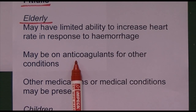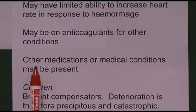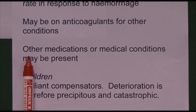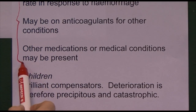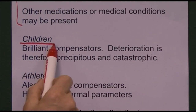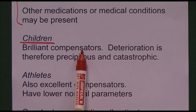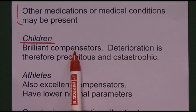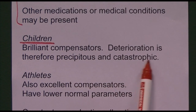Elderly patients may be on anticoagulants — even aspirin can prolong bleeding time, making haemorrhage more significant. They may also be on medications like beta-blockers that cause low heart rates. For all these reasons, severely traumatised elderly patients do not do as well as younger traumatised patients. In contrast, children are brilliant compensators — they can lose a lot of blood and still maintain their blood pressure for a long time, but then decompensate very quickly, making deterioration sudden and catastrophic.